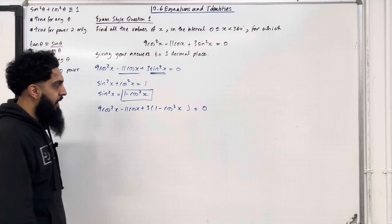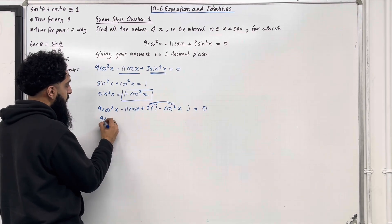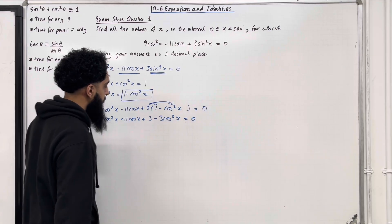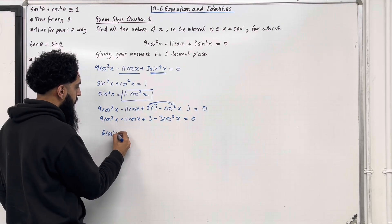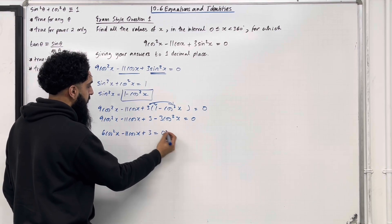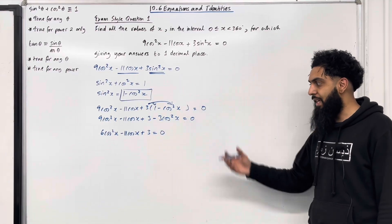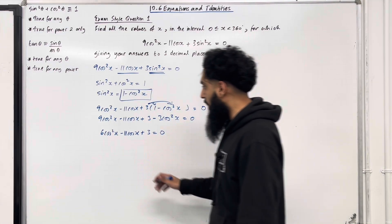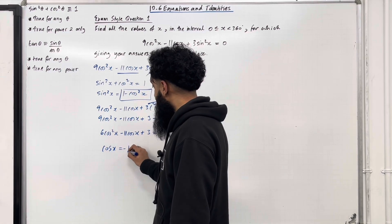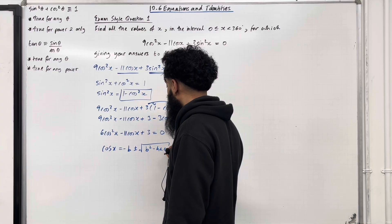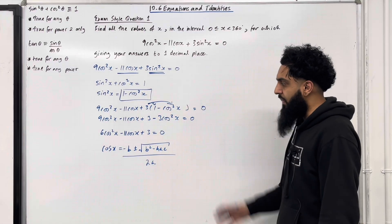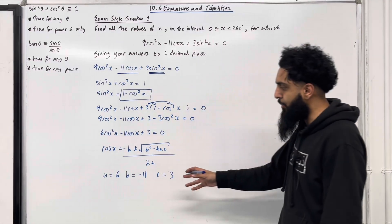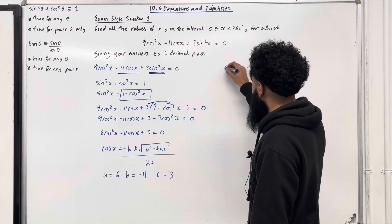Now I'm going to expand the bracket: 9cos²x − 11cos x + 3 − 3cos²x = 0. Simplifying gives 6cos²x − 11cos x + 3 = 0. I've generated a quadratic trigonometric equation. To find the solutions for cos x, I apply the quadratic formula: cos x = (−b ± √(b²− 4ac)) / 2a, where a = 6, b = −11, and c = 3.